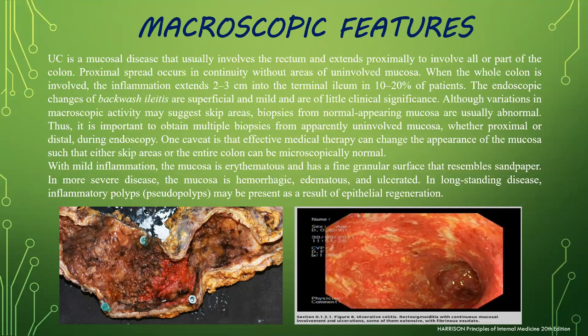Medical therapy can change the appearance of the mucosa, such that skip areas or the entire colon can be microscopically normal. With mild inflammation, the mucosa is erythematous and has a fine granular surface resembling sandpaper. In more severe disease, the mucosa is hemorrhagic, edematous, and ulcerated. In long-standing disease, inflammatory polyps — pseudopolyps — may be present as a result of epithelial regeneration.